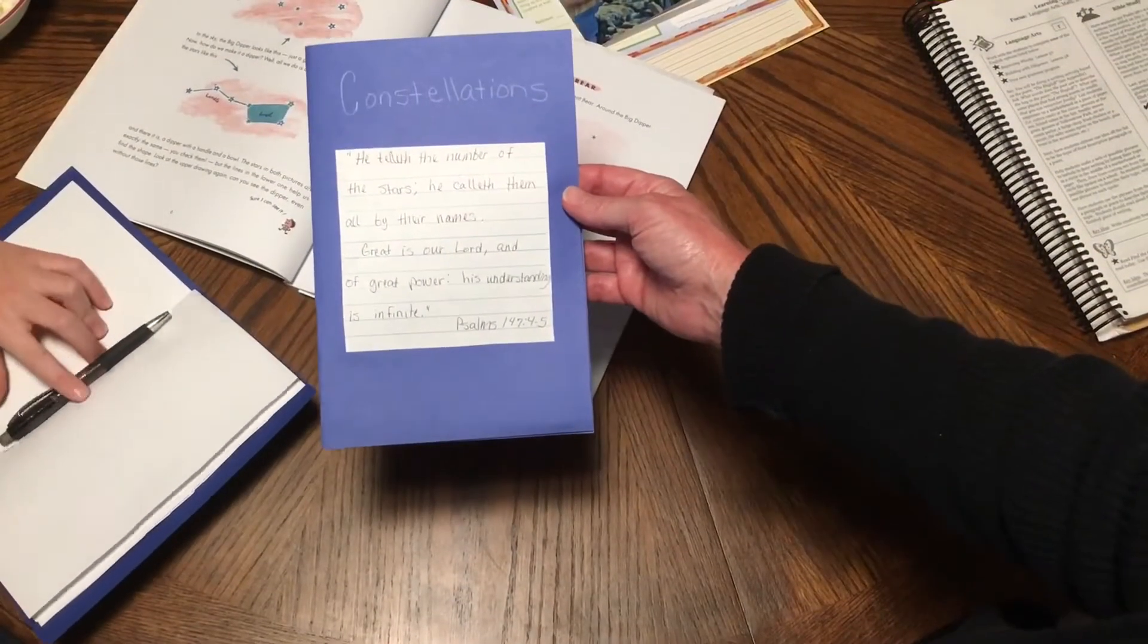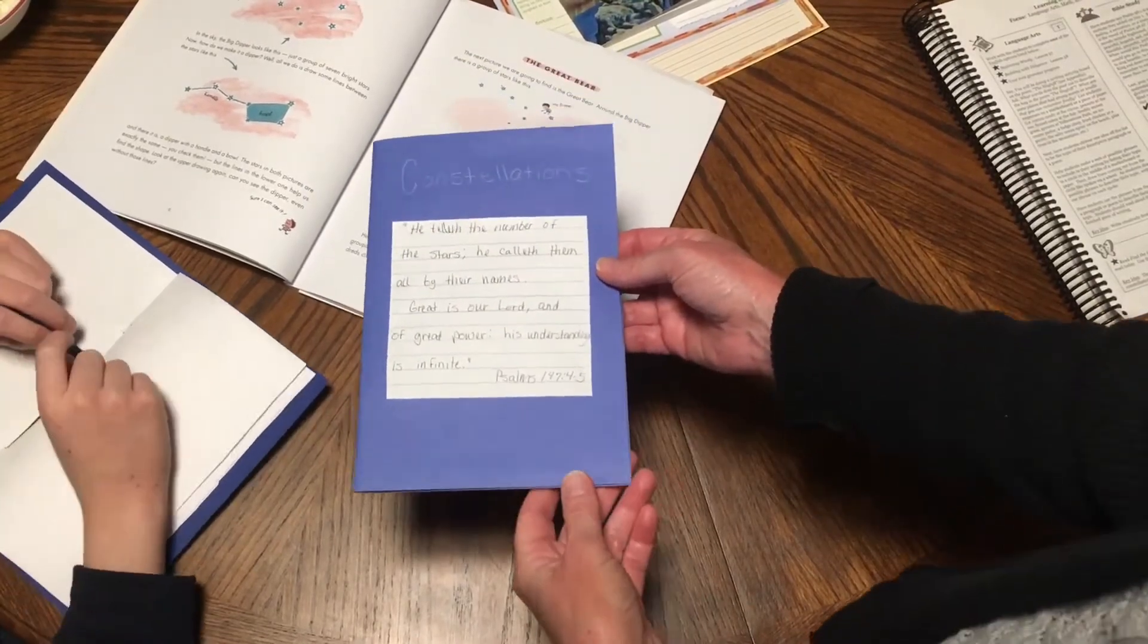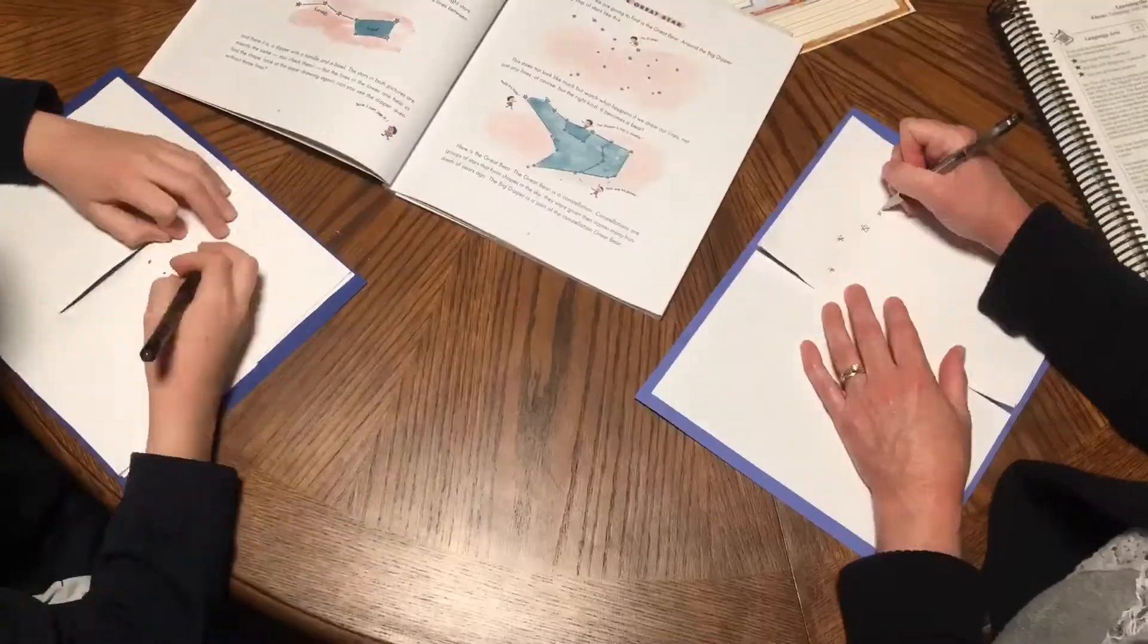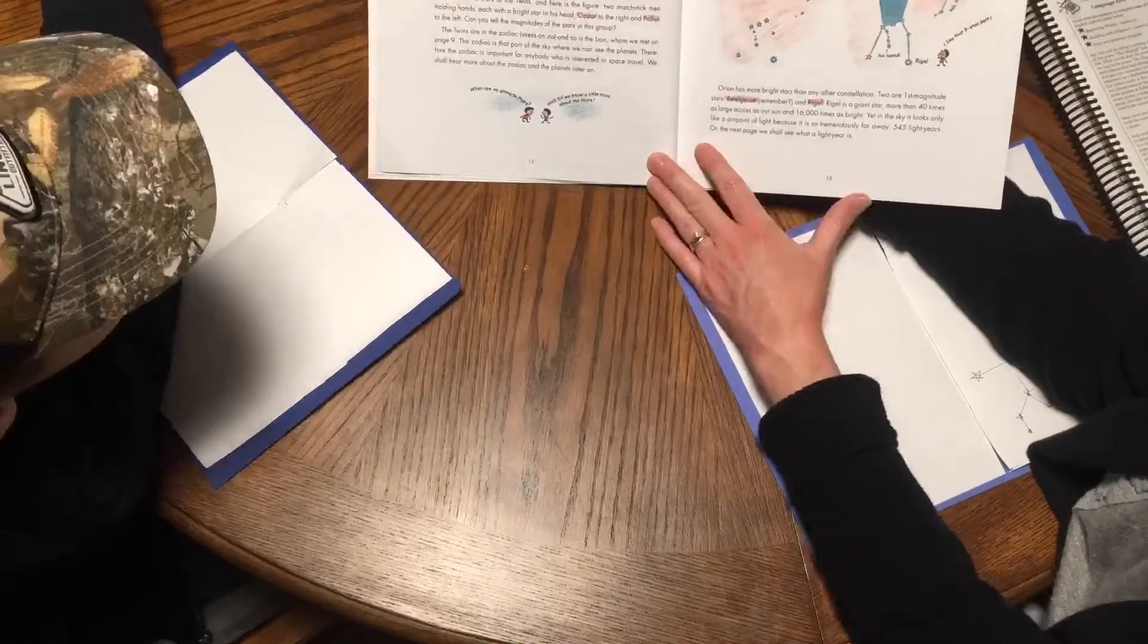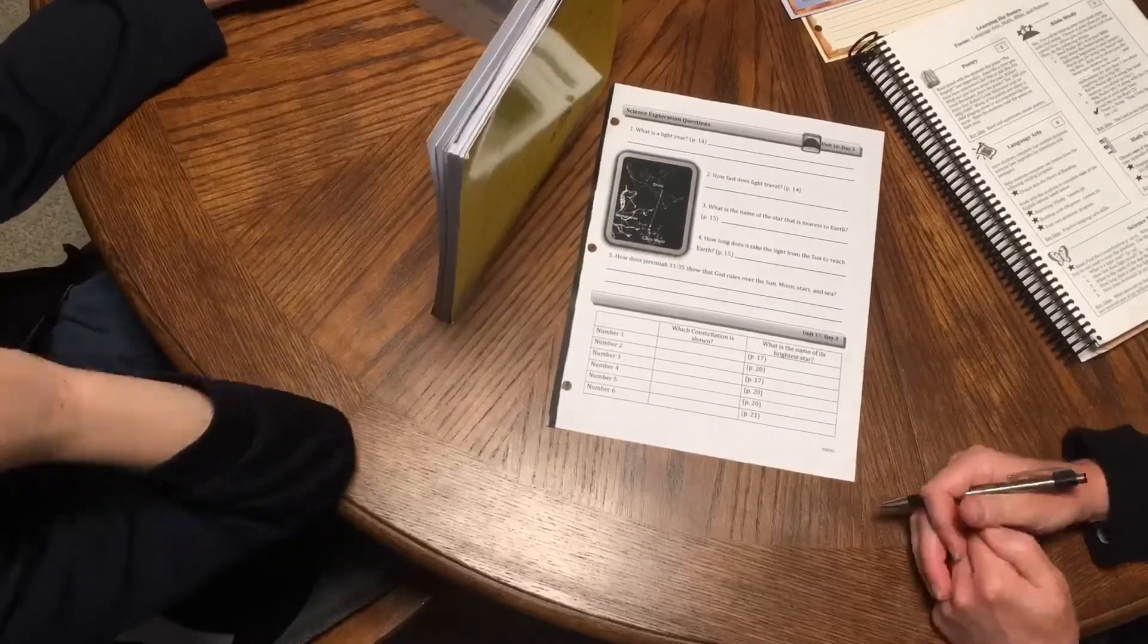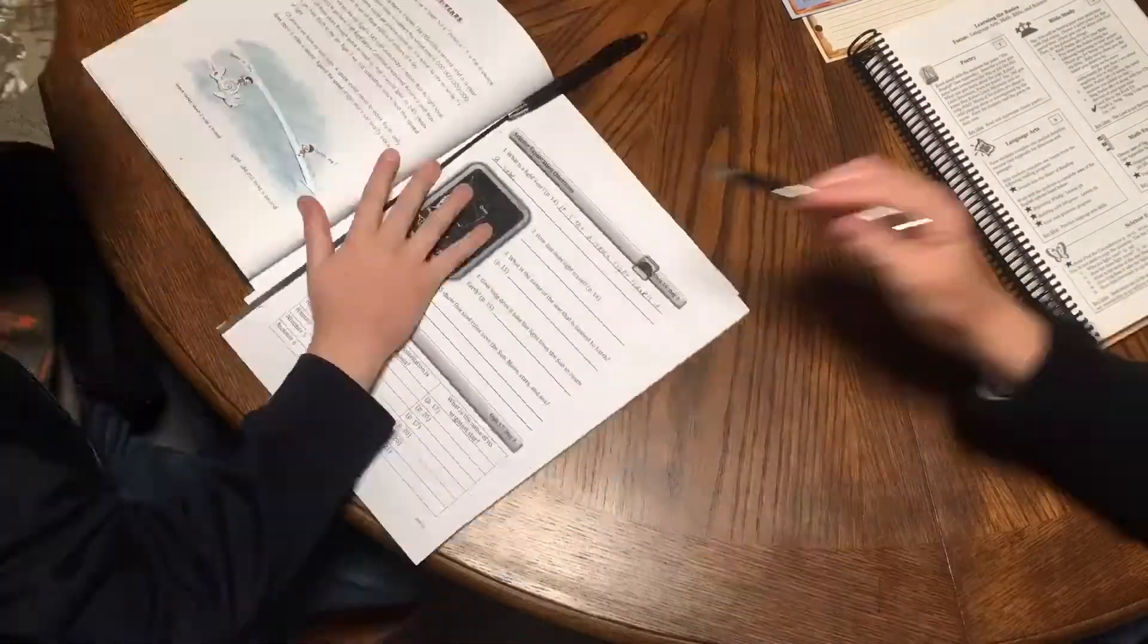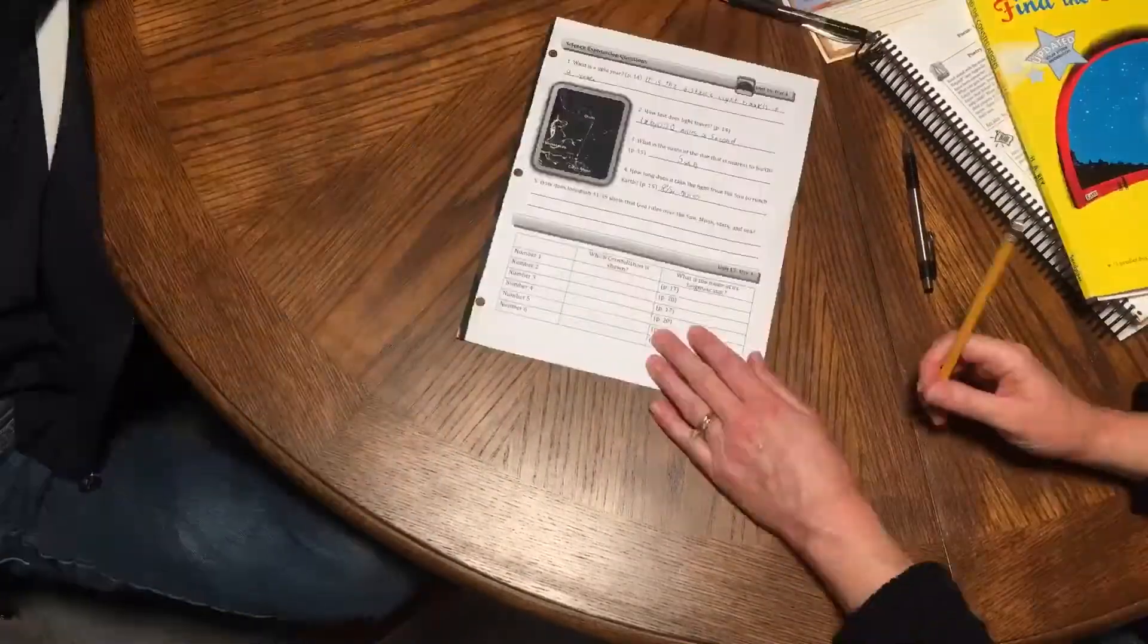The first thing they want us to do, which we did not do yesterday, was to draw a couple of the constellations that we've already talked about. And then we'll do some reading. We went ahead and made the couple of constellations from day one. We did our reading from day two. And we went ahead and did day three's reading, which had a few questions, and that's what you see here. He's filling out the answers. We went ahead and did this so we can do day four and have Friday off.